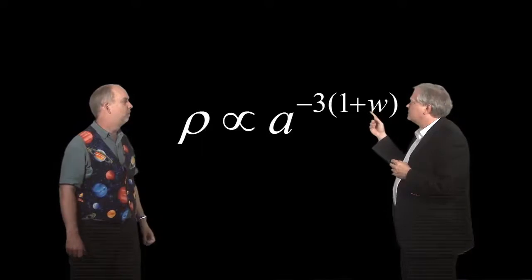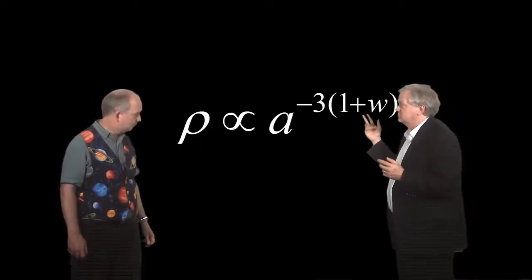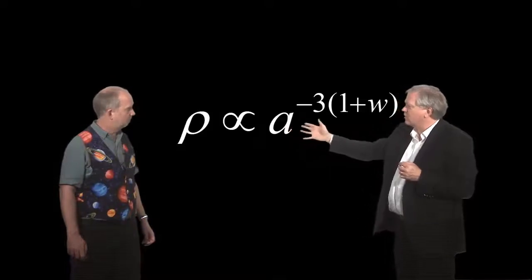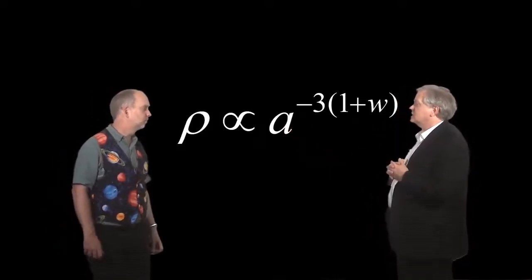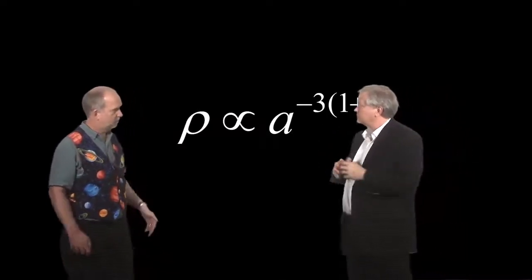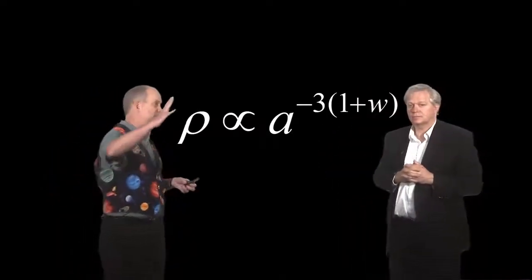The density is going to be going down as time goes on, as the universe gets bigger. Right. So instead of minus 1, it might be minus 0.9. Yes. In which case you would get the fact that the density is falling off slightly differently, and that means that the equation for distance is going to be slightly different. Yes, the universe will be going a bit less exponential.